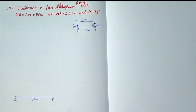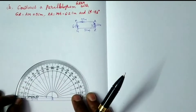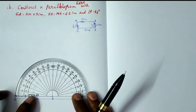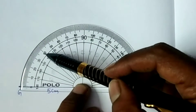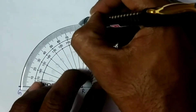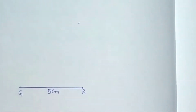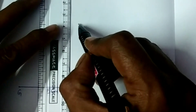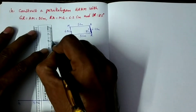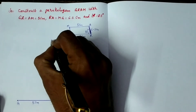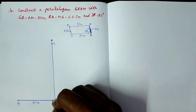Angle R equals 85 degrees. So, 85 degrees is not a standard angle, so we can construct this 85 degrees by using a protractor only. Keep the protractor like this. This indicates 0, 10, 20, 30, 40, 50, 60, 70, 80, and this one is 85 degrees. So, keep a point. Draw a ray from R through this point. So, angle R is 85 degrees now.